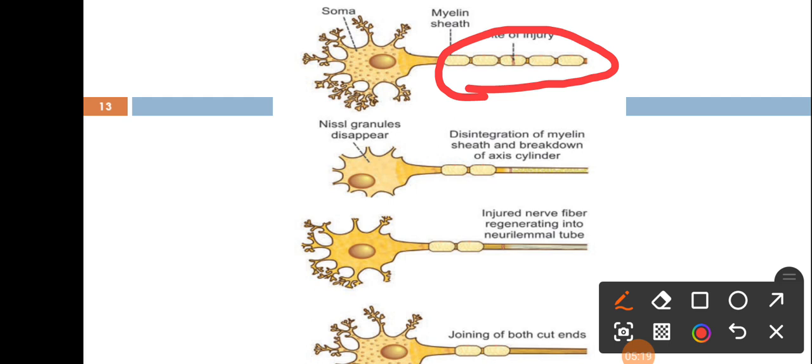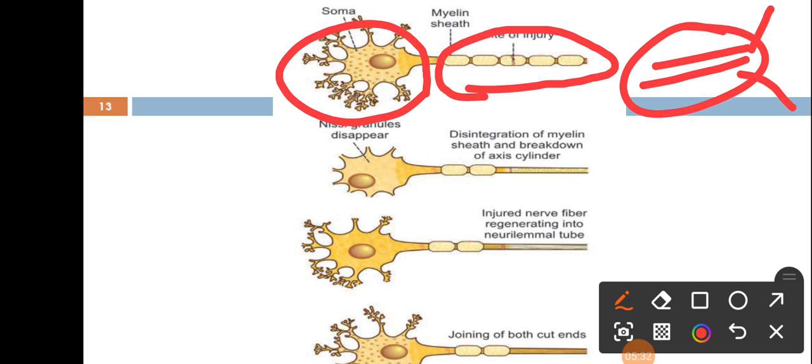The changes which are occurring in the proximal part and the nerve cell body are called retrograde degeneration. And if the changes are occurring in another neuron with which it forms the synapse, then it is called transneuronal degeneration.